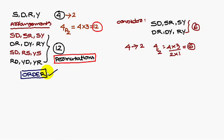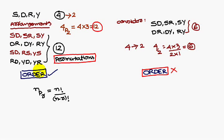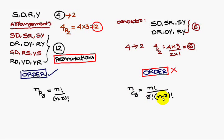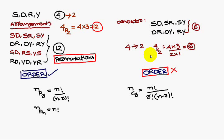So in permutations you are going to consider the order, whereas in combinations you are not going to consider the order. The NPR formula is N factorial by N minus R factorial. Similarly, NCR formula is N factorial by R factorial into N minus R factorial. And NPn is nothing but N factorial. So the main difference is: in permutations we consider the order; in combinations we do not consider the order.